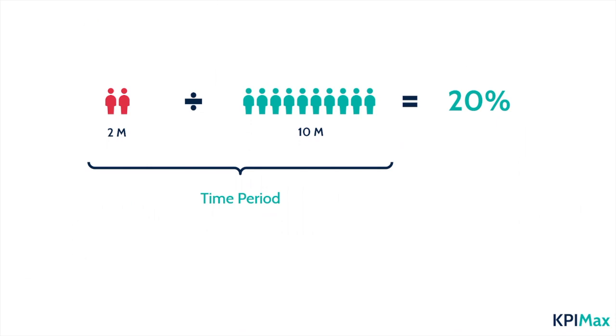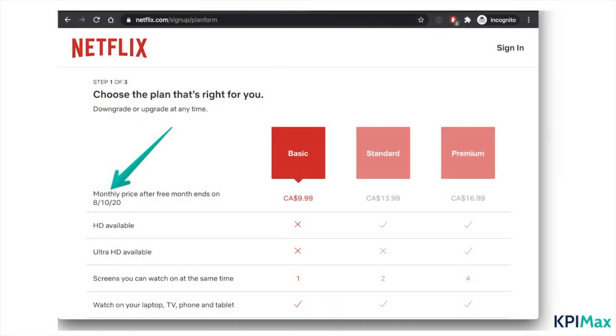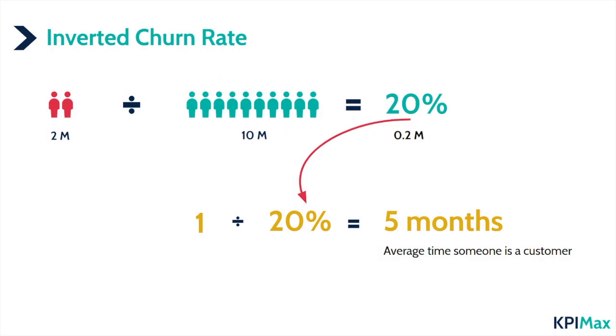Back to our Netflix example — the first important thing is that the time period we measure plays a big role. Customers can't churn unless their contracts are up, so we typically pick the same time period as our subscription plans. For a mix of monthly, quarterly, and annual plans, I generally recommend taking the average contract length. A neat side product of churn rate is that you can calculate the average customer lifetime by dividing one by your churn rate. In our Netflix example, one divided by 20% gives an average customer lifetime of five months.